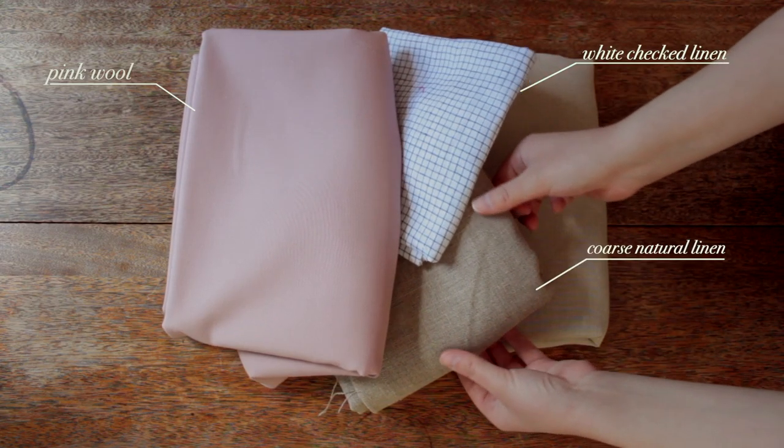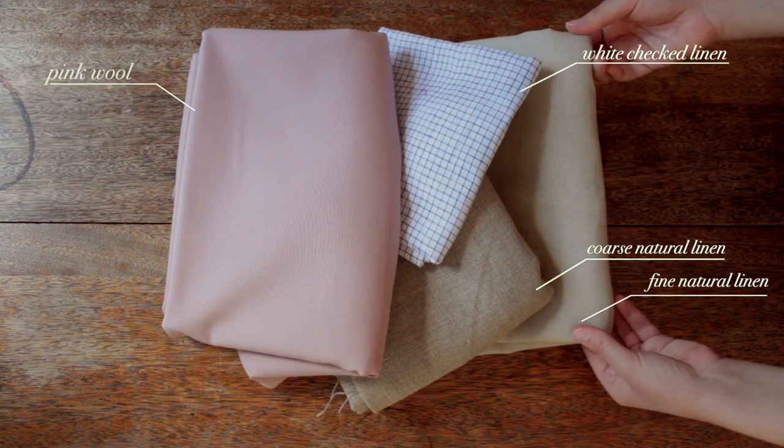Then a layer of coarse natural linen, and then a layer of fine natural linen. And extant stays usually have four layers. Some have fewer, but it's a good rule of thumb. And yeah, I guess let's get sewing.